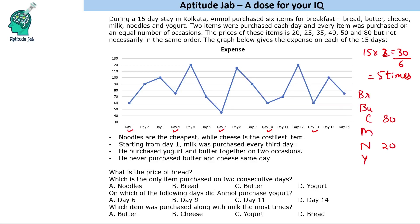He purchased yogurt and butter together on two occasions, and he never purchased butter and cheese on the same day. These are the conditions given. Let us make a table.